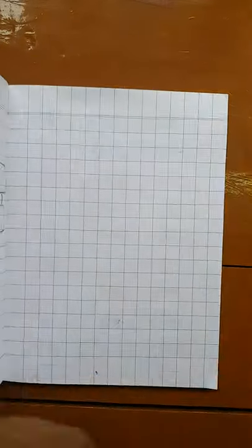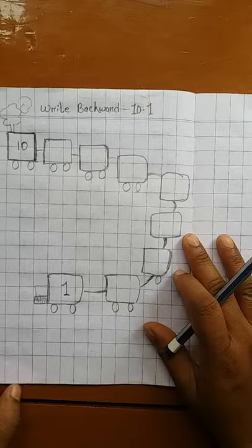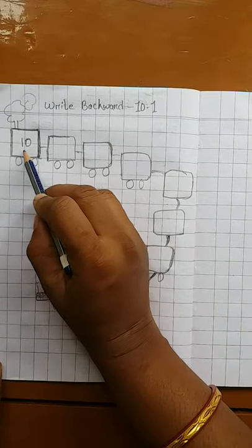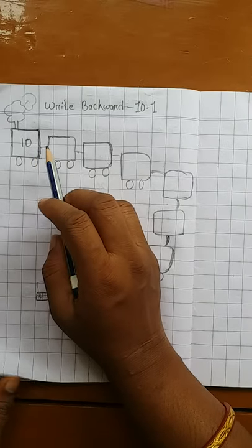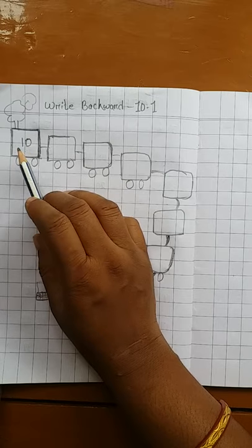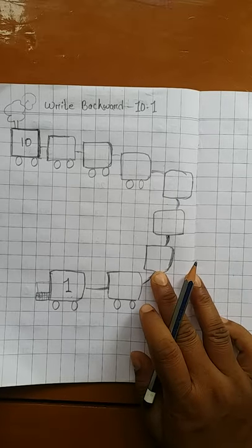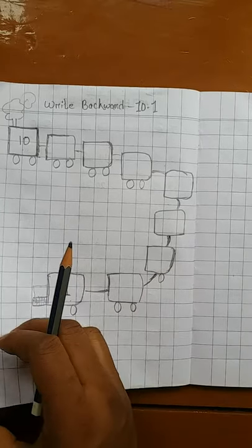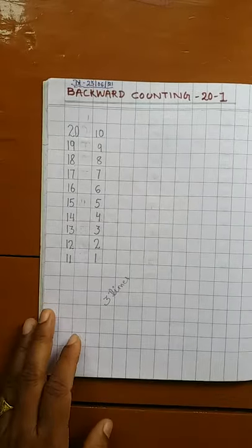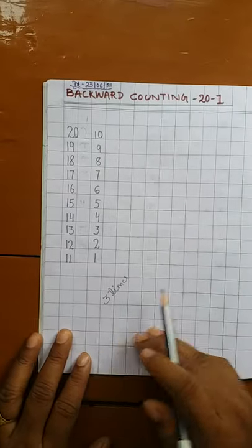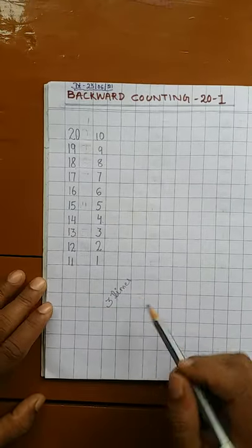Now look at here — here what we have to do? We have to write numbers in backward. Number 10 to 1. We all know backward counting 20 to 1. So here starting from number 10 we have to write till number 1. Before doing it we have to read. First we will read backward counting what we have already learnt, then we will do that exercise. Here backward counting 20 to 1 — so now read with me.